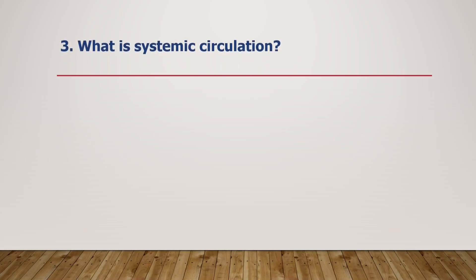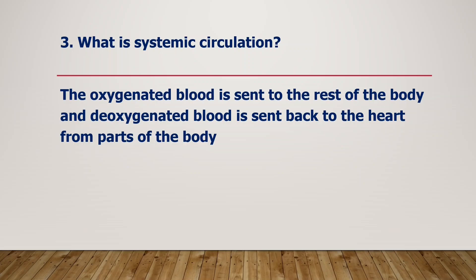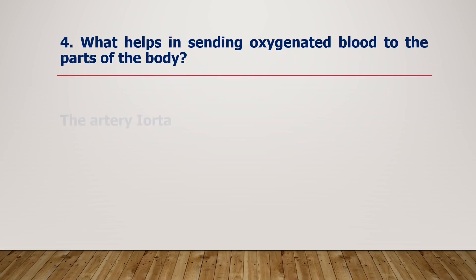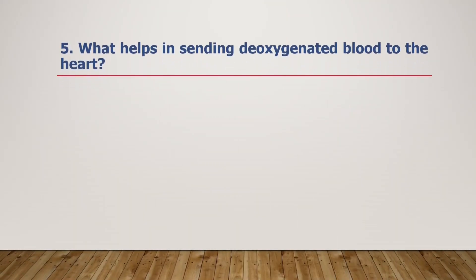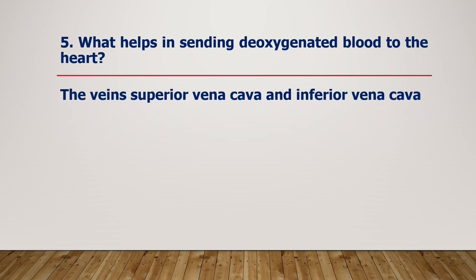What is systemic circulation? The oxygenated blood is sent to the rest of the body, and deoxygenated blood is sent back to the heart from parts of the body. The aorta helps in sending oxygenated blood to the parts of the body. The superior vena cava and inferior vena cava help in sending deoxygenated blood to the heart.